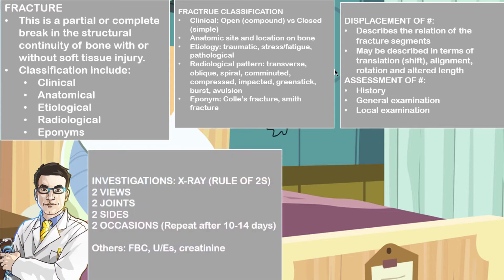You may order investigations such as an X-ray. We use the rule of twos: take two joints — the joint above the fracture and the joint below. Take two views, usually an AP view and a lateral, or even an oblique. Take two sides — the fractured side and the normal side for comparison. And take X-rays on two occasions or more: at the time the patient presents to the hospital, as well as two weeks after the fracture.